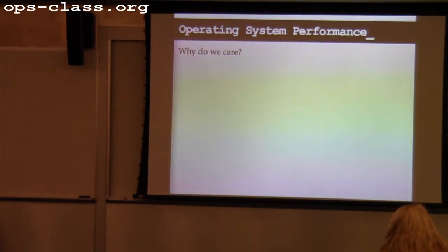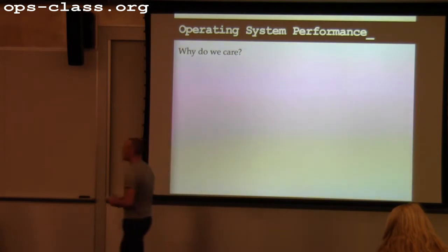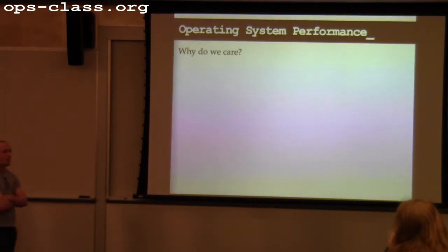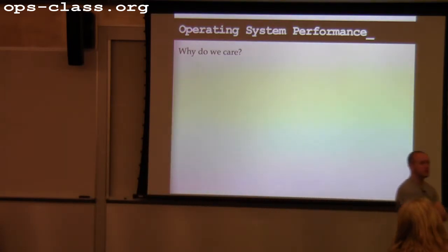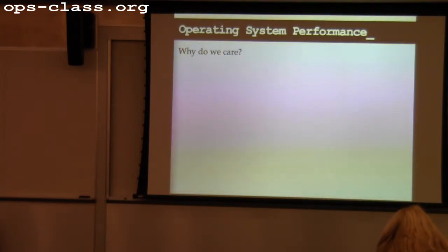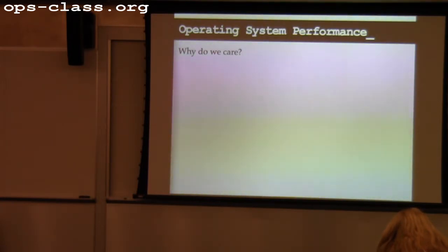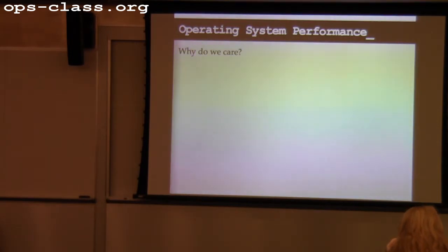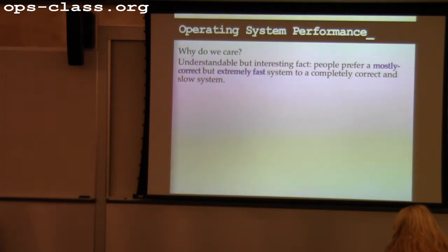Why do we care about performance? When I talk about performance, what am I normally trading off? What might I have to give up to get performance? Safety — or broadly speaking, correctness. The less checking you do, the faster your system gets. And having a system that's twice as slow but has 1% fewer bugs isn't necessarily a hot-selling system. People like fast. They also like having all the apps work.